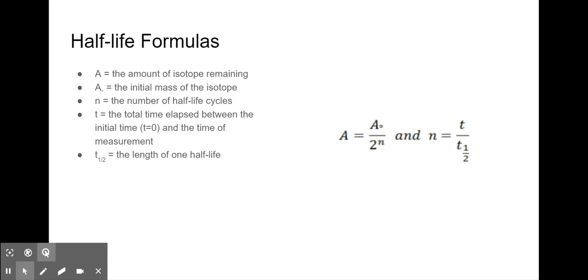Let's get down to the math and formulas for half-life. A, or capital A, is equal to the amount of isotope remaining. A sub-naught is the initial mass of the isotope. N is equal to the number of half-lives here, not moles.